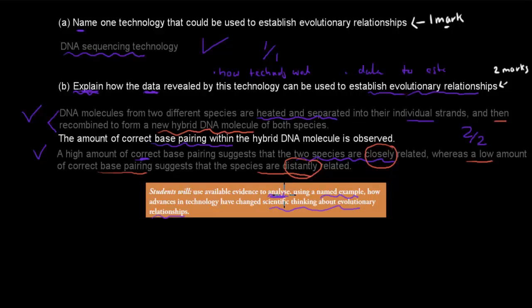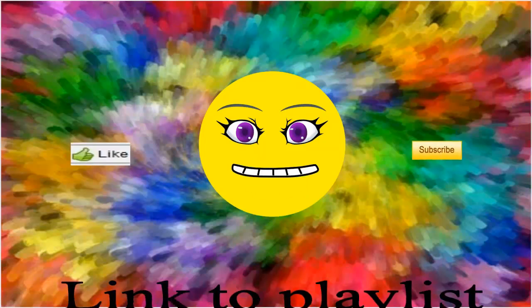So that's why they can ask you to explain. But they say a named example, which is why they can ask you for a specific technology. And they also ask you to talk about the link between evolutionary relationships, which was that second part. Explain how data revealed by this technology can be used to establish evolutionary relationships. So that was the actual dot point itself. So all these A and B parts come from this dot point. I hope that was useful. Thank you for watching.